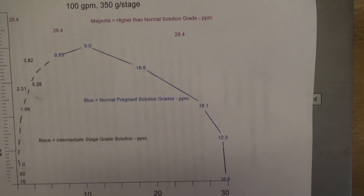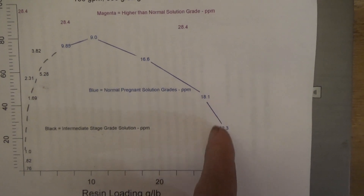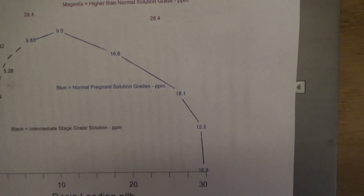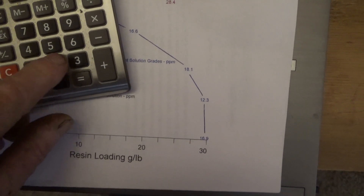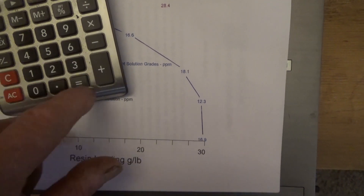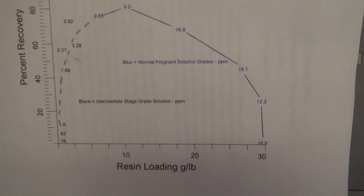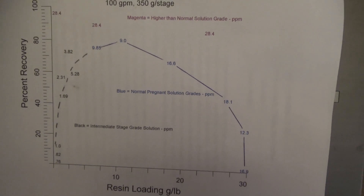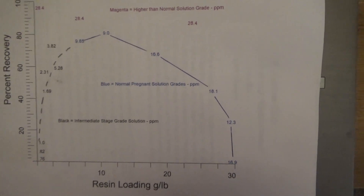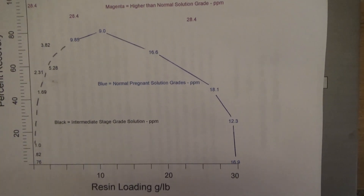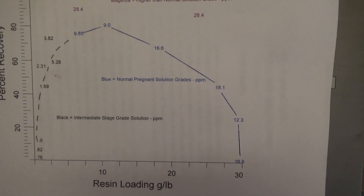Then recovery starts dropping off again until it just hits a wall right here at between 25 and 30 grams per pound. That tells you you don't want to try to load more than that in your resin. At 25 divided by 31, you're already at about 0.8 ounces of gold per pound of resin. Times sixteen hundred, that's over fourteen hundred dollars in gold contained in fifteen dollars of resin — about a hundred-to-one ratio. We can easily destroy the resin to get the gold — not a problem.